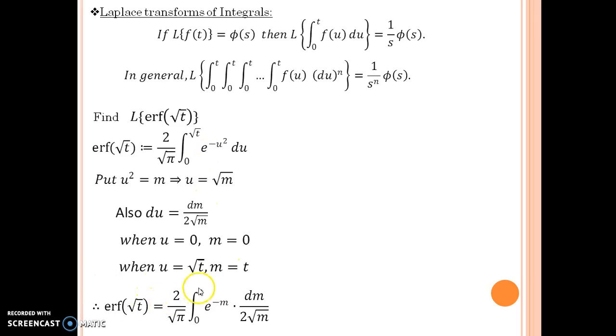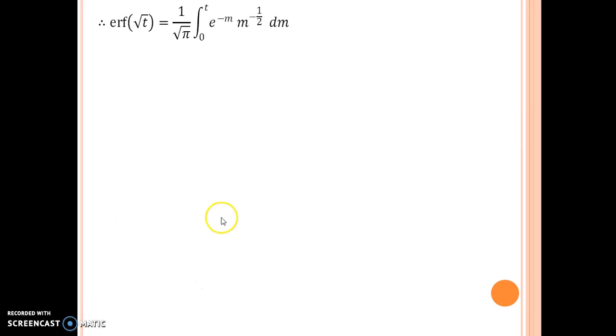So my entire function is now looking in this manner and then I can cancel this 2. Substitute these values that you have obtained here and it would look like this. Cancel this 2 and then m, this root m has to be kept inside the integration sign because dm, m is the variable under integration, so I can write in the numerator in this manner, m to the power minus half. So I have entirely changed the way my function was defined, error function of root t. Now it looks by the change of variable in this manner.